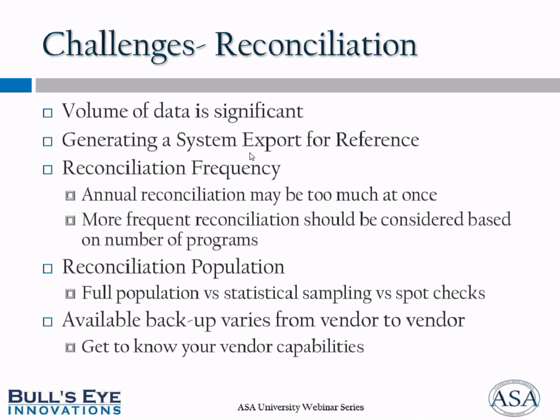What is your reconciliation population? Should you do your entire population in your check, a statistical sampling, or just a spot check? A spot check is typically when you may have 10 or 15 vendors that you deal with, but you notice that you have the most problems with four or five of them. So you may want to do a 100% check on those four or five and either leave the others alone or do a statistical sampling of the others, just to make sure that you did your due diligence. There are different reconciliation populations you can look at.